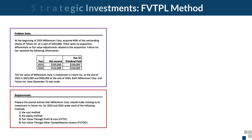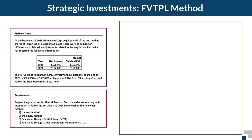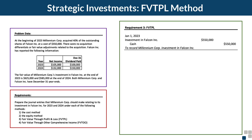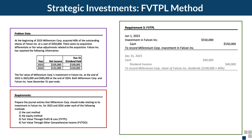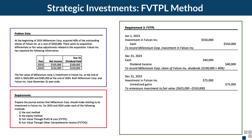Now we'll move on to requirement 3 — journal entries under the Fair Value Through Profit and Loss approach, or FVTPL. Again on January 1st, the acquisition entry is the same. On December 31st, 2023, Millennium records its proportionate share of Falcon's $100,000 dividend as dividend income — debit cash, credit dividend income for $40,000. Then under this method we must remeasure the investment to fair value. The fair value at end of 2023 is $625,000, representing a $75,000 unrealized gain over the initial $550,000 cost. We record a debit to investment in Falcon and a credit to unrealized gains, which flows through the income statement.